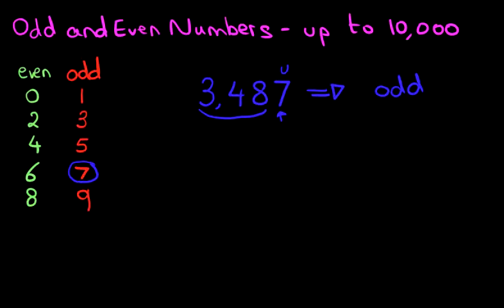Now, let's have a look at our second example. Suppose we have 6,734. 6,734. Is this number odd or even?